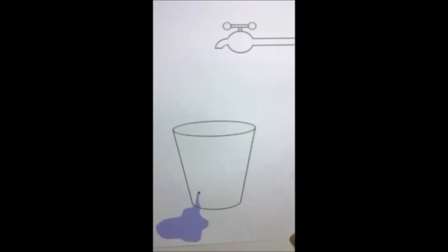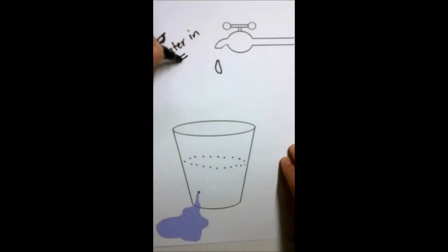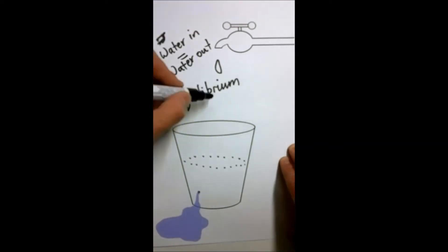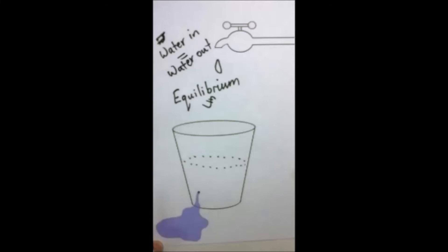So let's pretend you have a leaky bucket beneath a drippy faucet. If the water supply pressure drops, slowing down the rate of the drips, and this matches the rate the bucket leaks, you have a situation where water in equals water out.